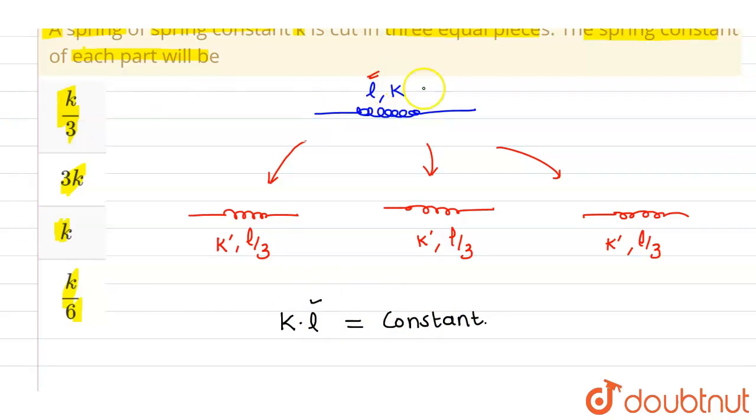Now for this particular spring, the product of force constant k into spring length l is kl, and for this new spring the product is k dash into l by 3. These two must be equal for a particular spring.